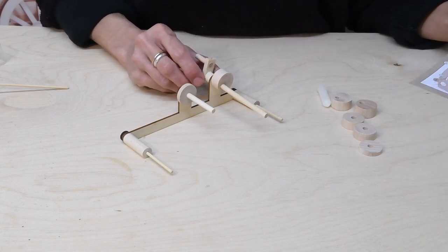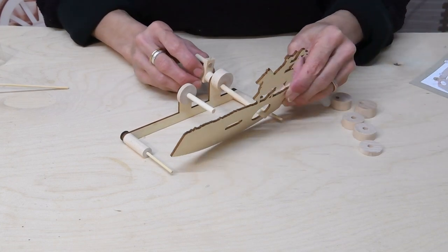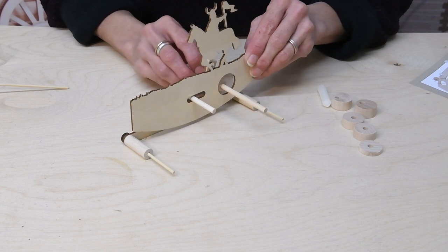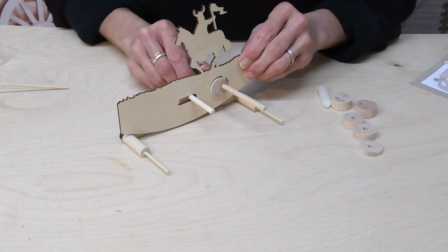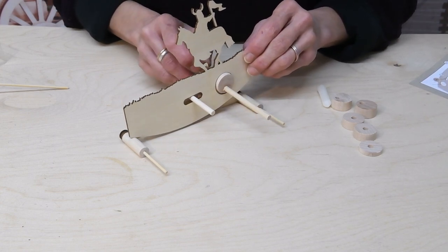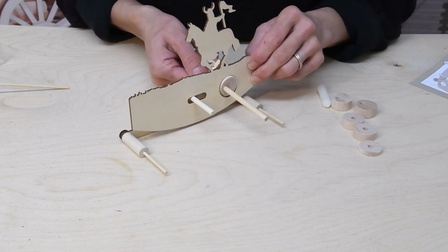So once the first cam has dried and the glue has set, we can put the first layer on and if I turn the crank handle around you can see how the cam causes the piece to rock.